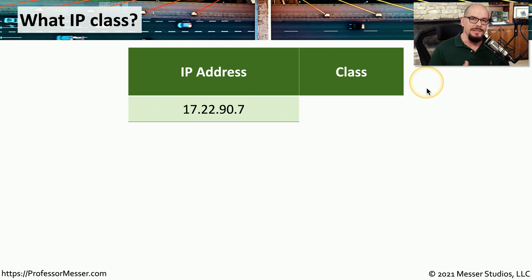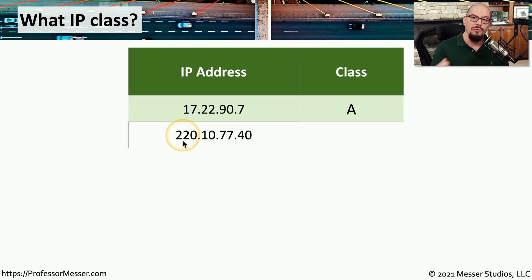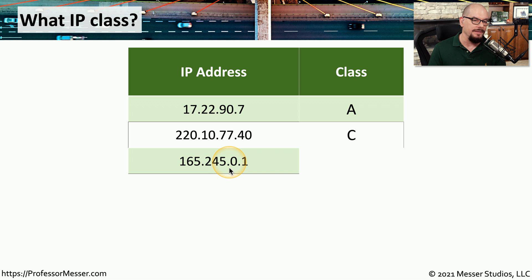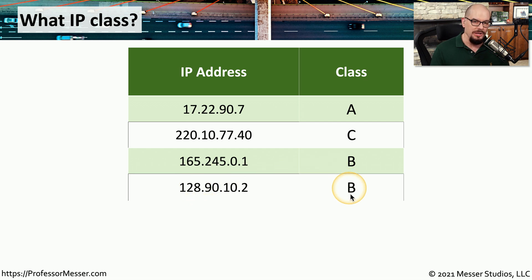Let's go through a number of IP addresses and see if we can determine what the default class is for each address. We'll start with 17.22.90.7 — looking at the first octet of 17, any number between 1 and 127 is a Class A address. The next is 220.10.77.40 — that 220 at the beginning makes this a Class C address. The next IP address is 165.245.0.1 — looking at 165, referring to our chart or converting it to binary and looking at the first four bits, you should be able to determine that it is a Class B address.